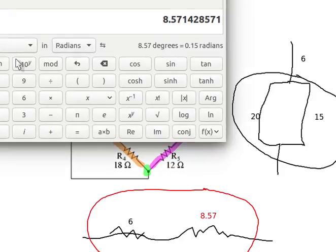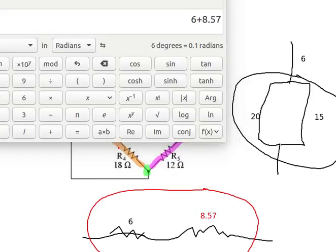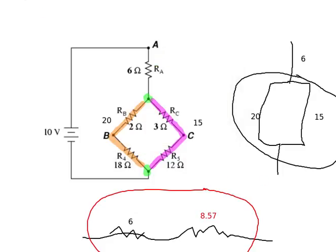So how do I combine them in series? Well, I'm just going to add them together. So I'm going to have 6 plus 8.57. And that tells me that my equivalent for the entire circuit is a grand total of 14.57.